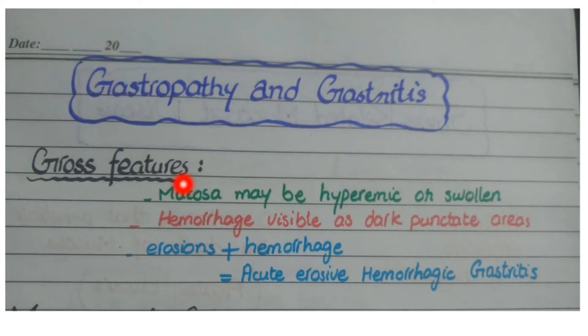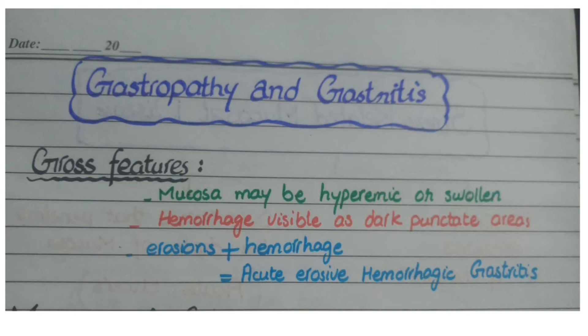On gross specimen of either gastropathy or gastritis, the mucosa may be hyperemic or swollen. This occurs because cell injury leads to cytotoxic or vasogenic edema, causing mucosal swelling. Hyperemia results because in response to cell injury, the vascular tissue of the surrounding mucosa increases its vascularity, leading to hyperemia and swelling.